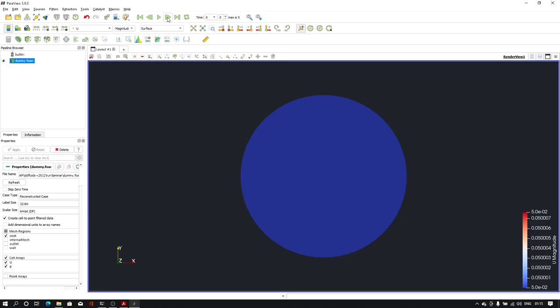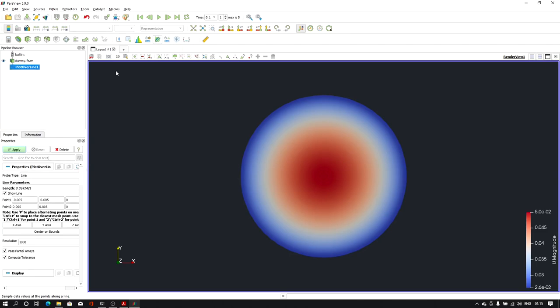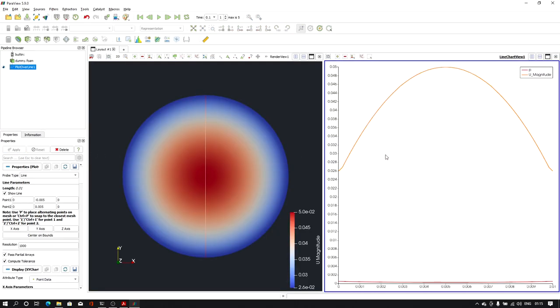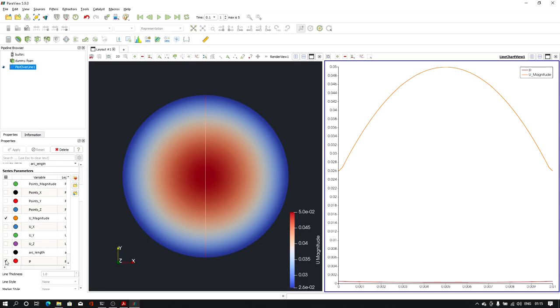So as you can see initially there is nothing. Then if I go for the next time step and if I rescale to data range it is showing that velocity profile. Now how to know that this profile is a parabola or not? I can simply click on this plot over line filter and choose y axis or x axis, any axis of your choice, click on apply button.